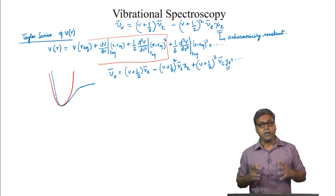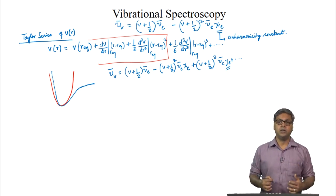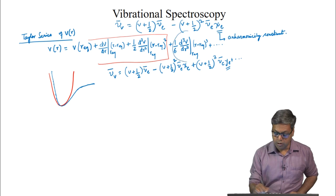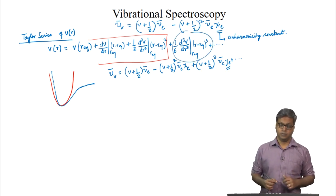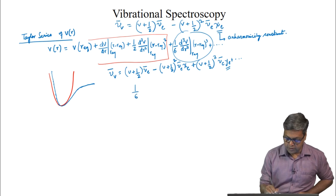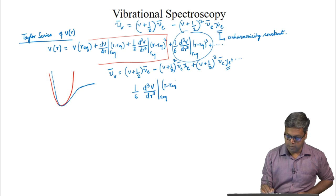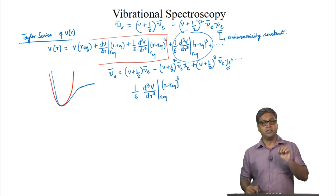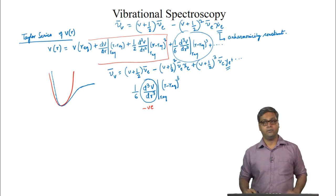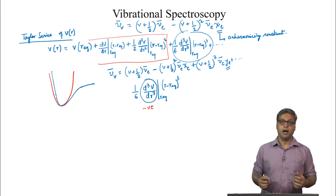We can think of the perturbation to the harmonic potential as considering one more higher-order term — the third-order term in the Taylor series expansion. If we look into this third-order term, that is (1/6) d³V/dr³ at r_equilibrium times (r minus r_equilibrium)³, we can see that if this third derivative is negative, then V(r) will be steeper for r less than r_equilibrium.